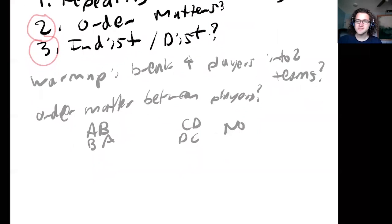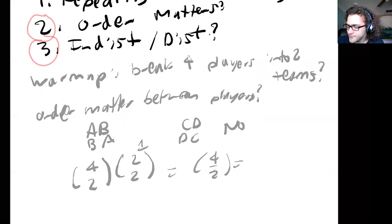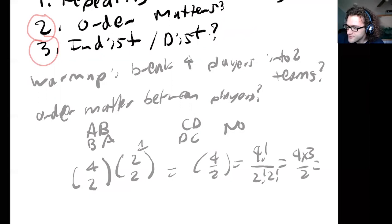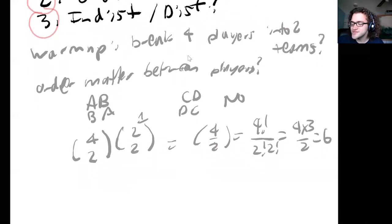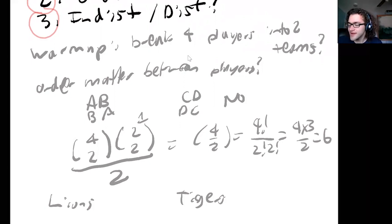We might think: order doesn't matter, so let's use combinations. We're choosing out of four possible players — we'll choose two people for the first team, and then we have two players left for the second team. That gives us four choose two, or four factorial over two factorial times two factorial, which is six possibilities. However, we're missing a subtlety here: I don't really have a Lions team and a Tigers team — the two teams look the same to me. So I have to divide by two to avoid overcounting.